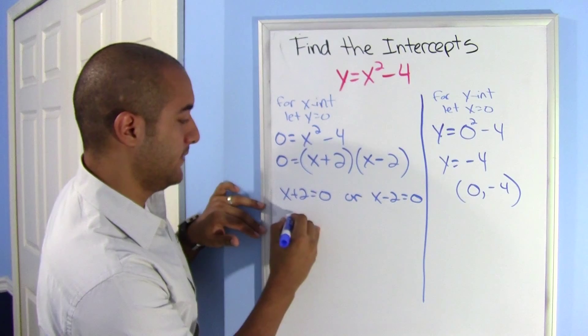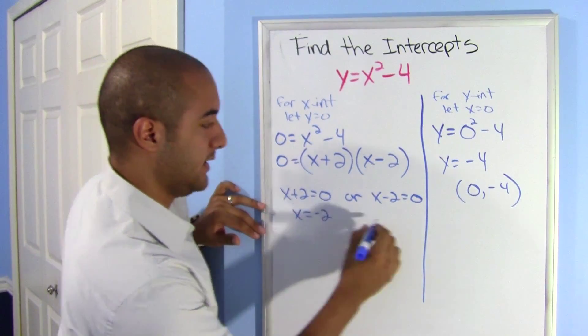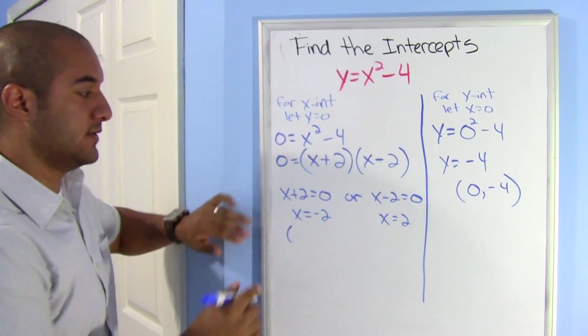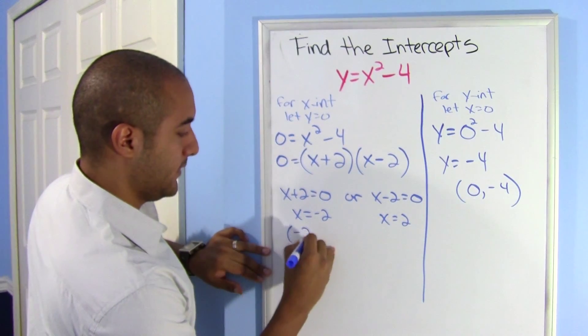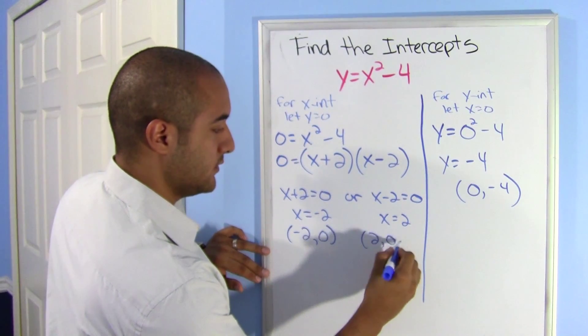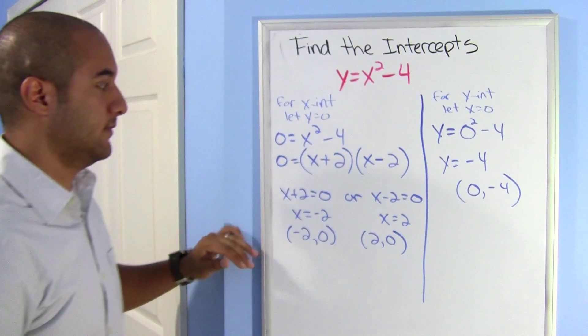And I solve for both of them. Notice that I get the same thing. So my coordinates are still negative 2, 0, and 2, 0. There.